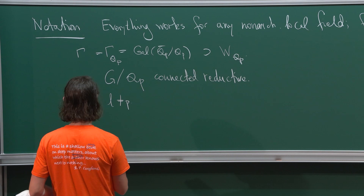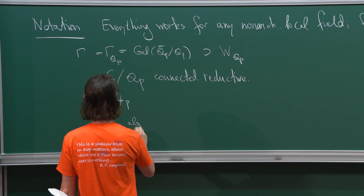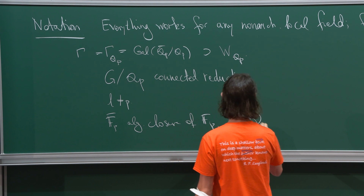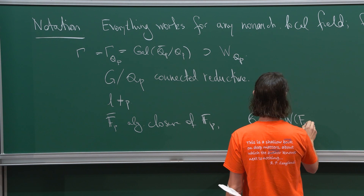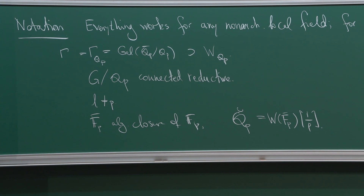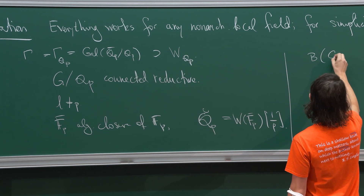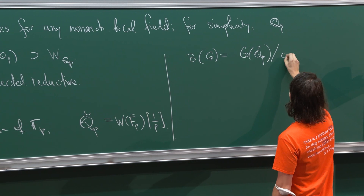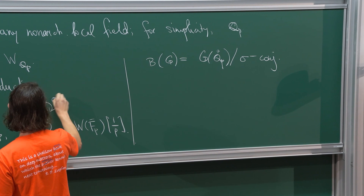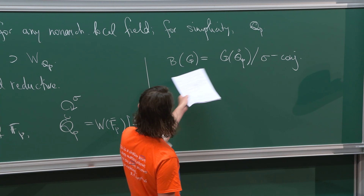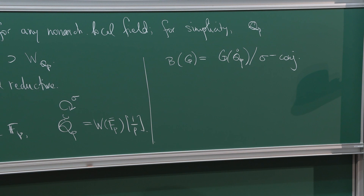The final piece of data I might fix is an FP-bar, algebraic closure of FP. Then we had this field that also appeared in Jared's talk, usually called QP-breve, which is the completion of the maximum unramified extension of QP. Using this you get the set B of G of Kottwitz. One way to think about this is that it's QP-breve modulo sigma conjugation. The Frobenius on this is for some reason called sigma. It turns out that this looks like a huge uncountable set, but actually it's a countable set that you can describe very explicitly in a combinatorial way.